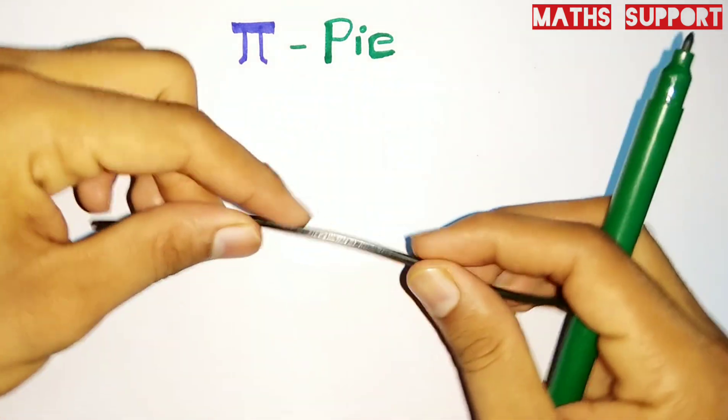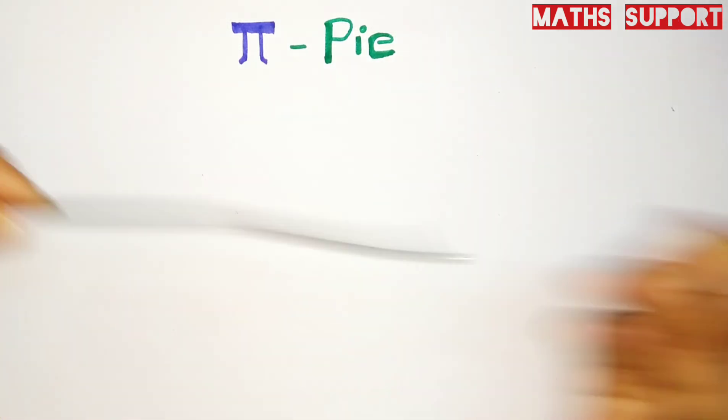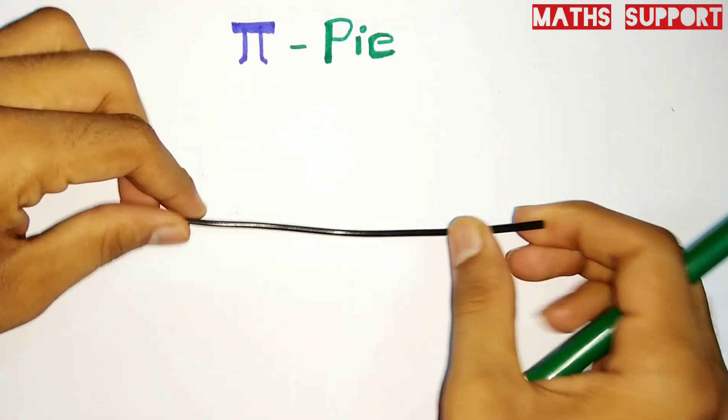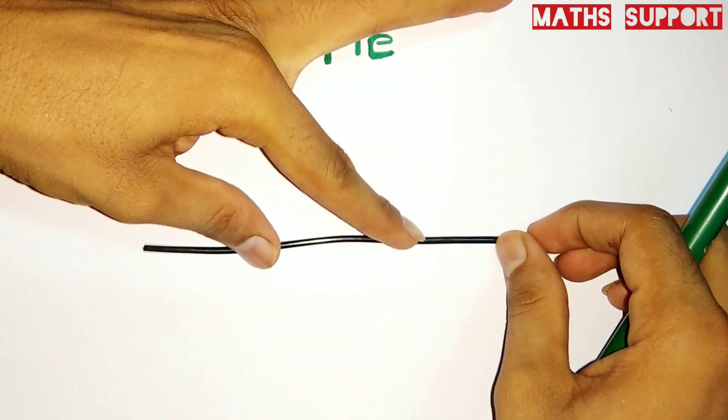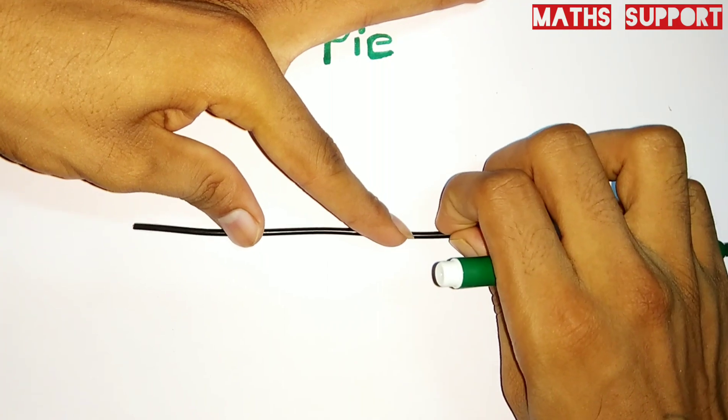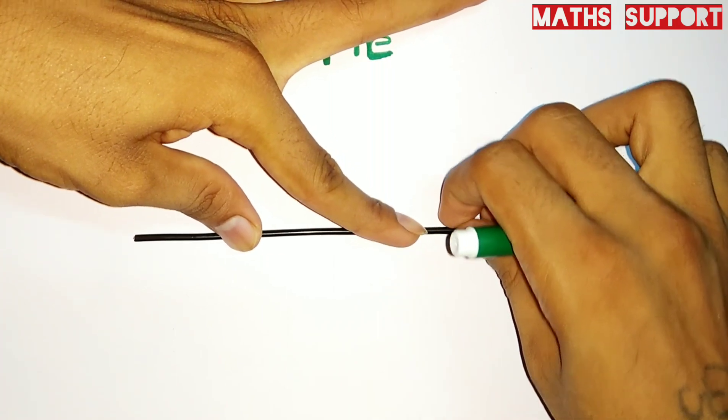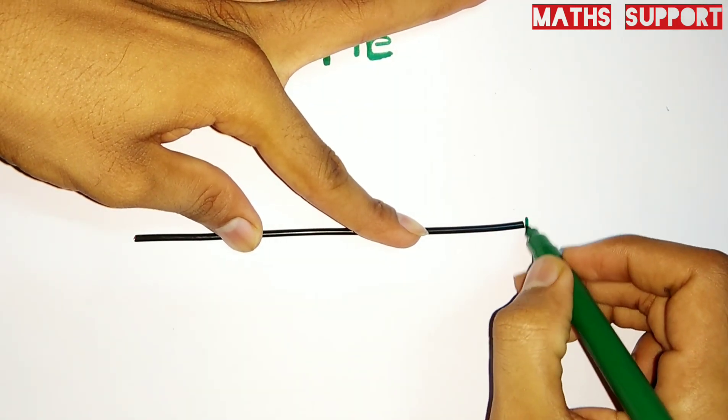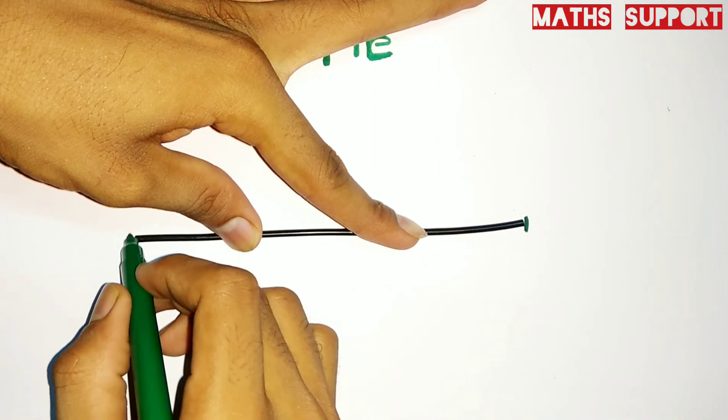Suppose I'm taking one wire. First of all, I'm measuring the length of this wire because I want to make a circle from it. I'm straightening this wire and marking the endpoints approximately.